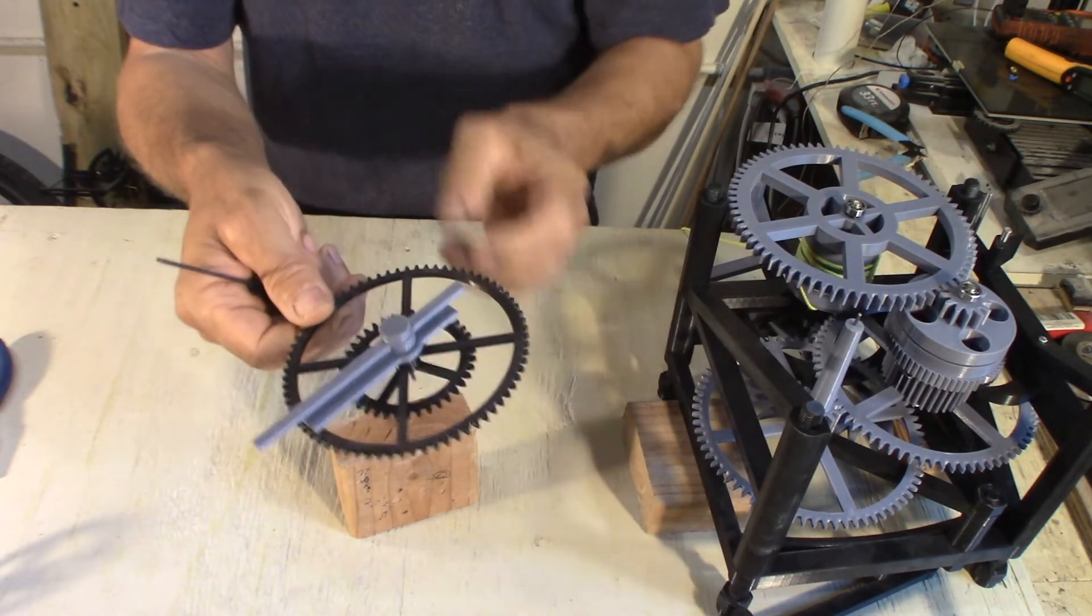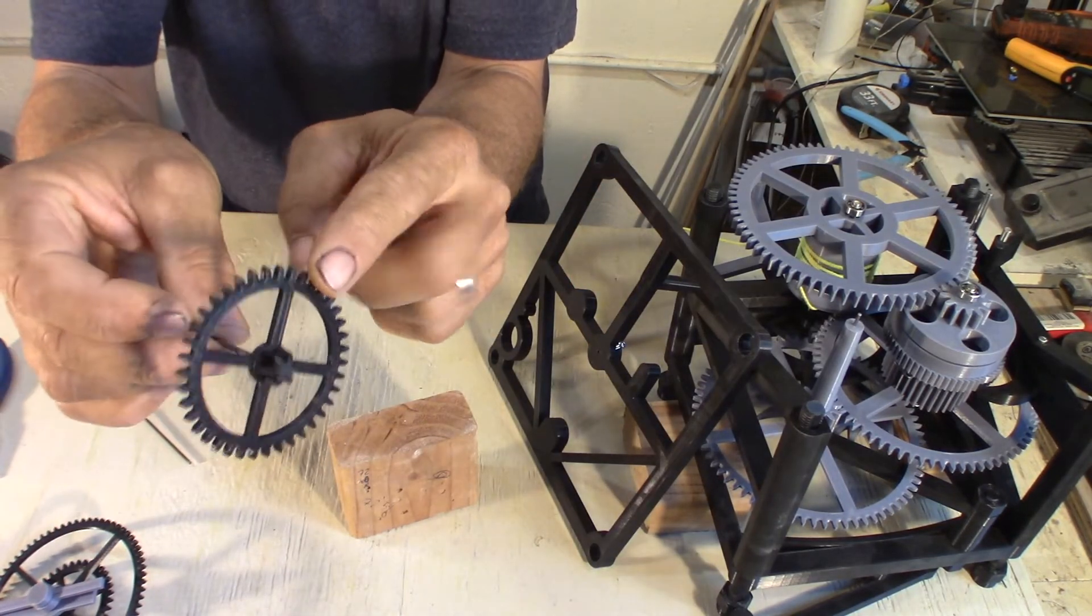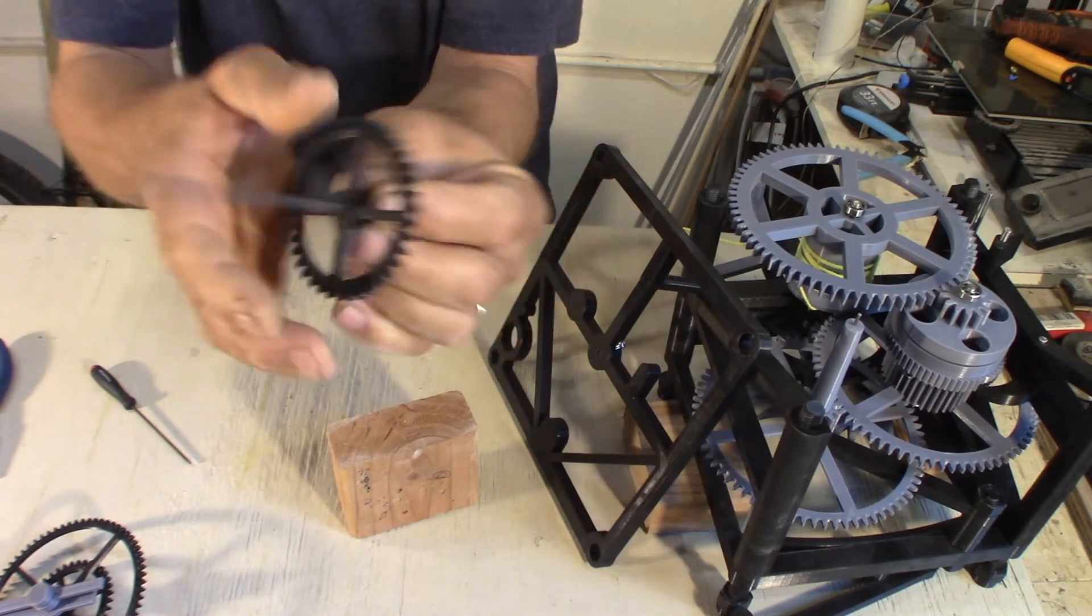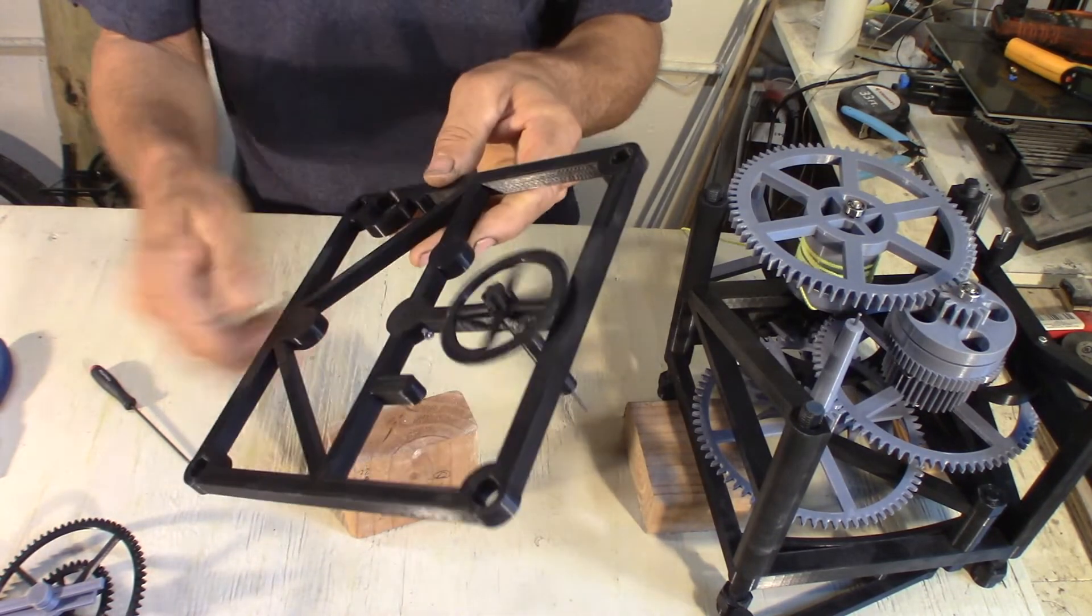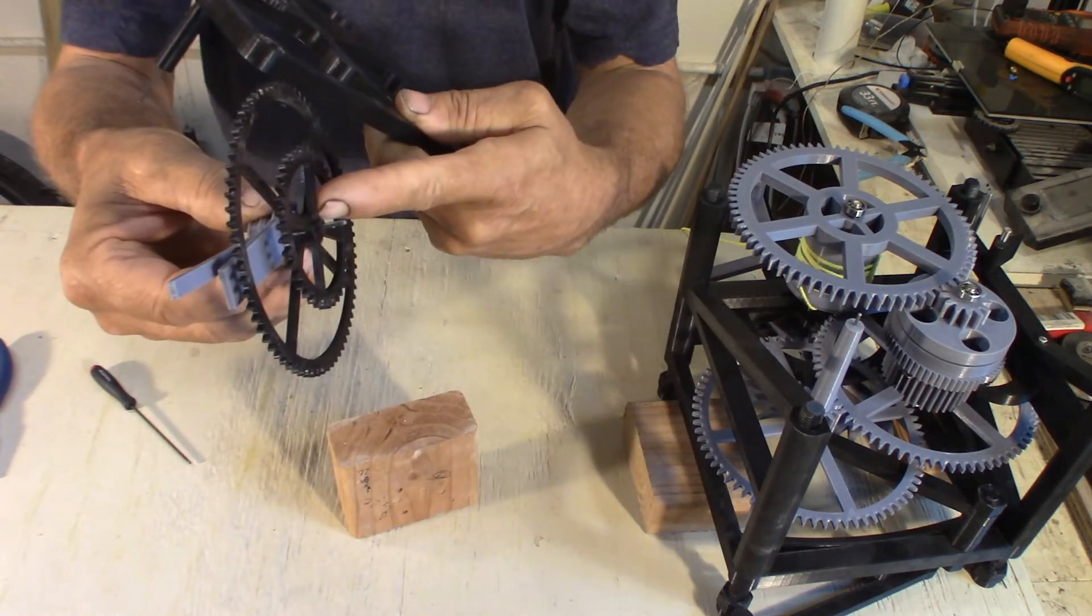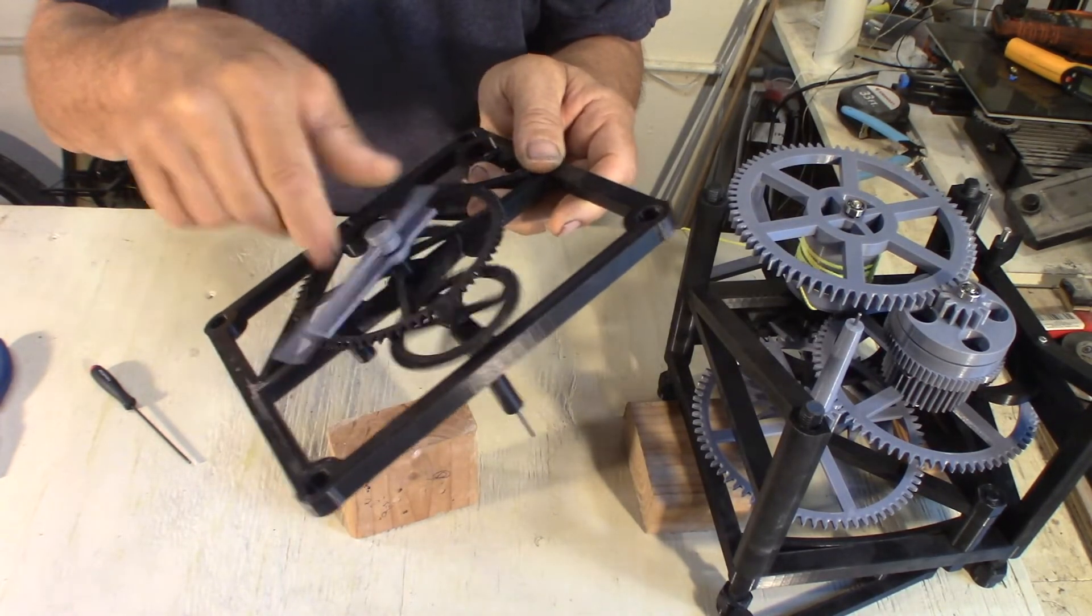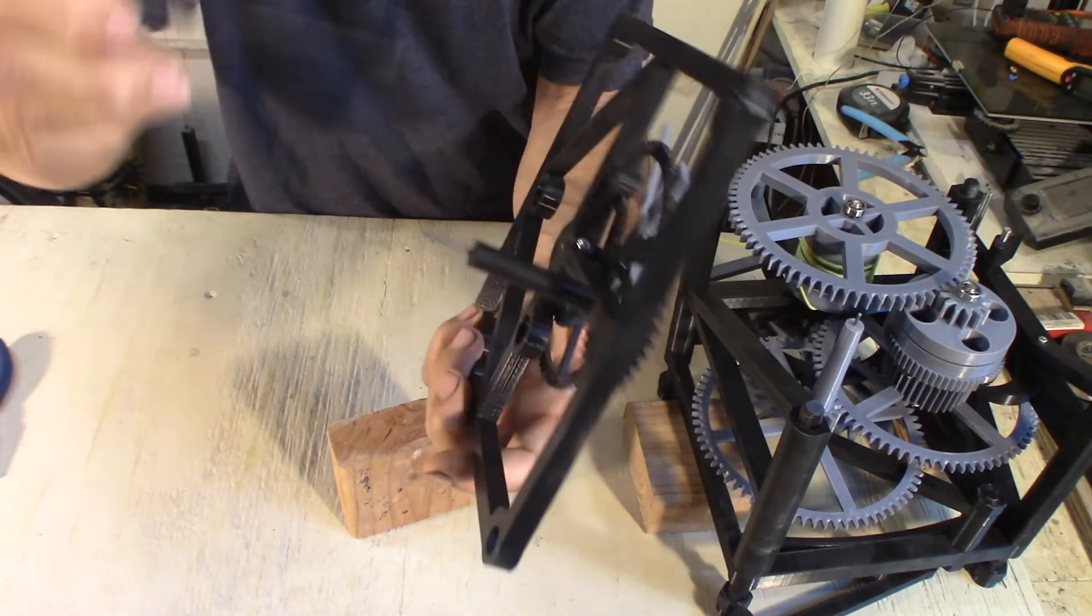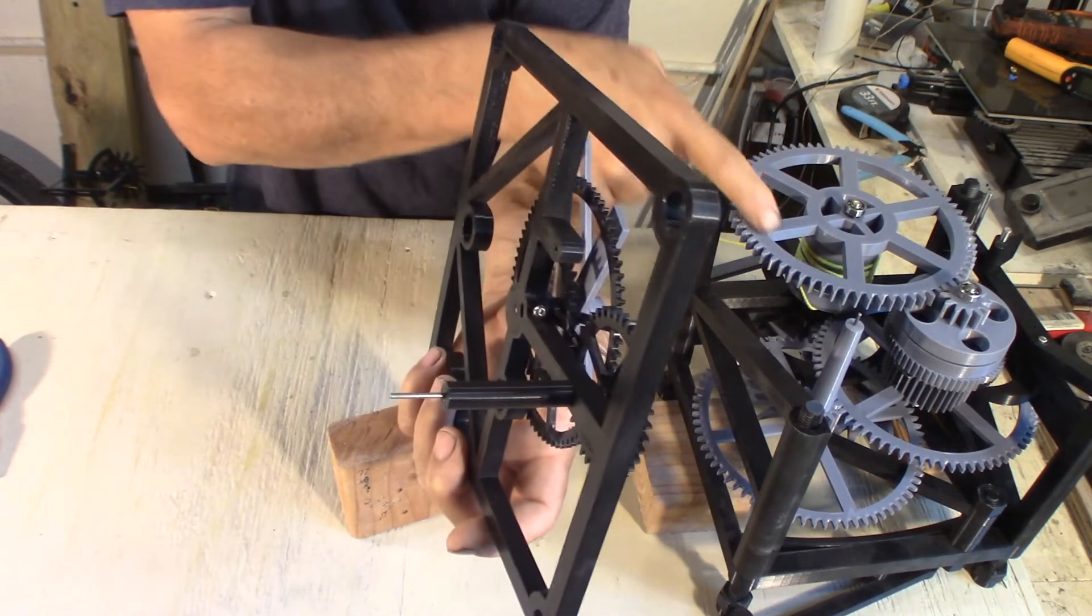Now we can assemble the front frame. You can put the 639 gear. I have a little washer, two millimeter washer here. Make sure it spins, and then the hands come in there with the same two millimeter washer. You work, and now I can secure the hands. Make sure the piano wire doesn't stick out, it could jam the gears.